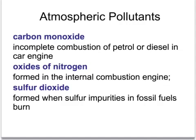The main pollutants include carbon monoxide. This is produced by cars in their exhausts, and it's formed because of the incomplete combustion of fuels like petrol or diesel in the car engine. There are also oxides of nitrogen formed in car engines, and sulphur dioxide, which is formed when sulphur impurities in fossil fuels burn, making sulphur dioxide — SO2.